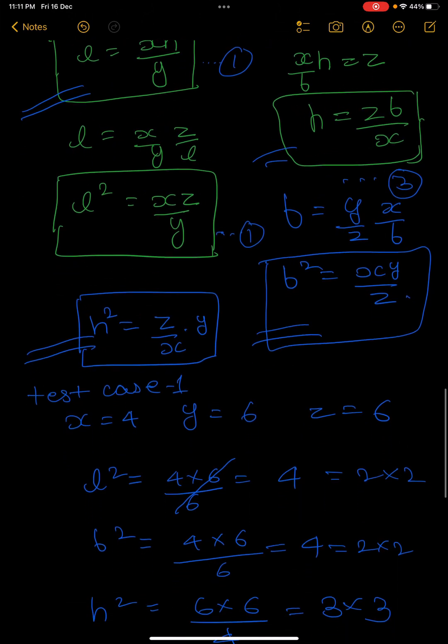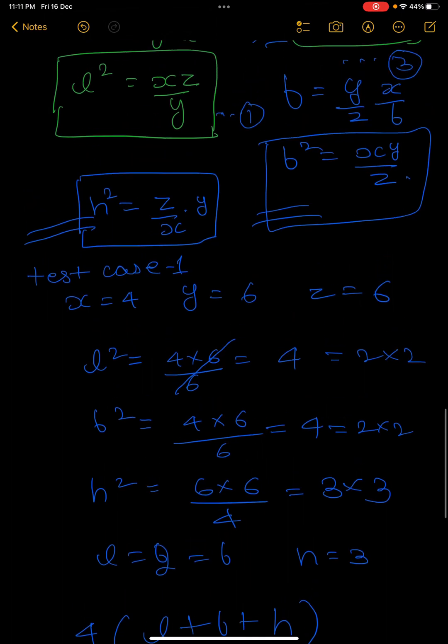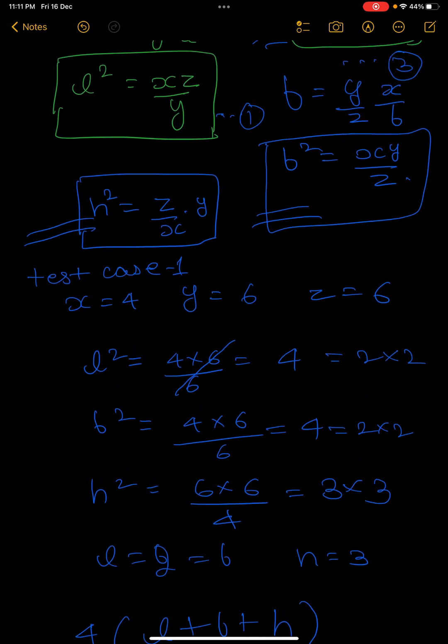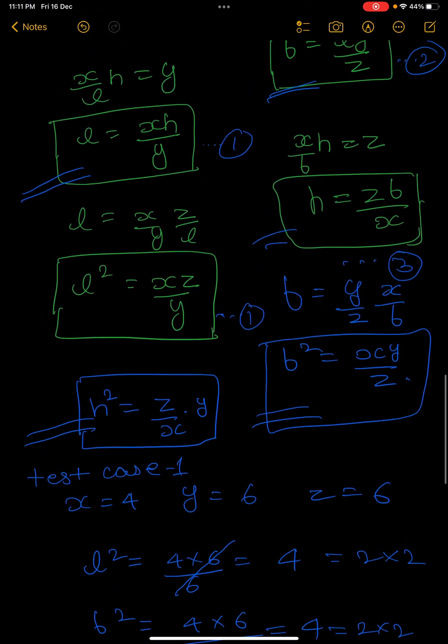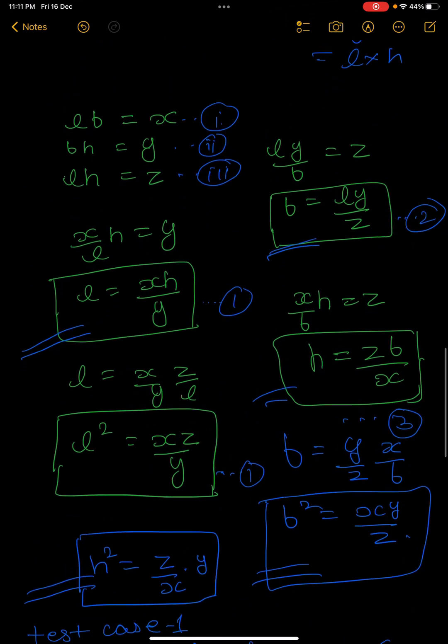Now let us understand with the first test case. You are given x equals 4, y equals 6, z equals 6. Initially we assumed that the area of first face is x, second is y, and third is z.